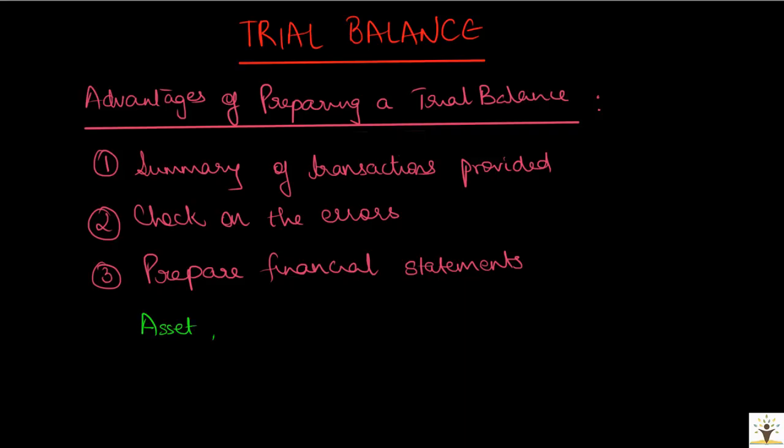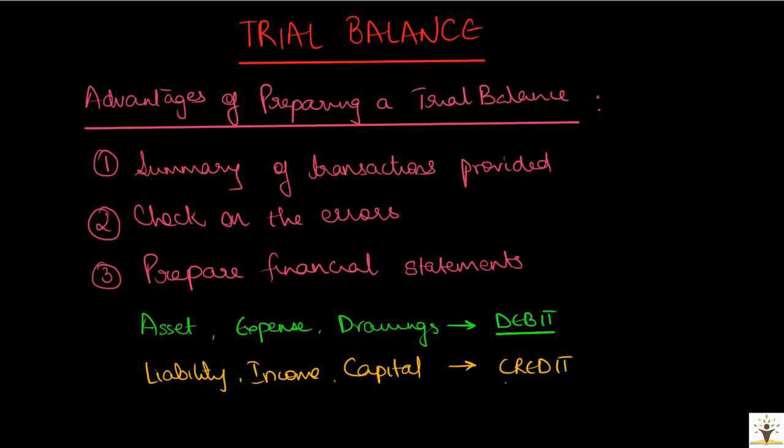All the assets, expenses and drawings account will have debit balances. Hence, amount should be written in the debit column of the trial balance for all these accounts. Whereas for all the liabilities, income and capital, the amount should be written in the credit column of the trial balance. In order to prepare a trial balance correctly, one should be able to clearly distinguish between various categories of accounts.